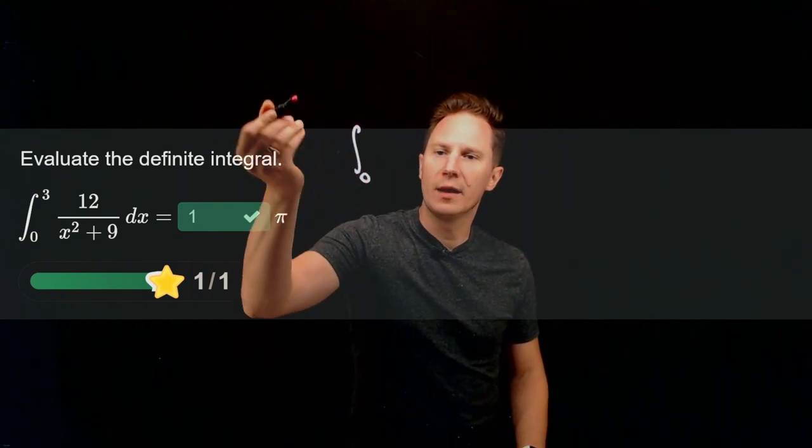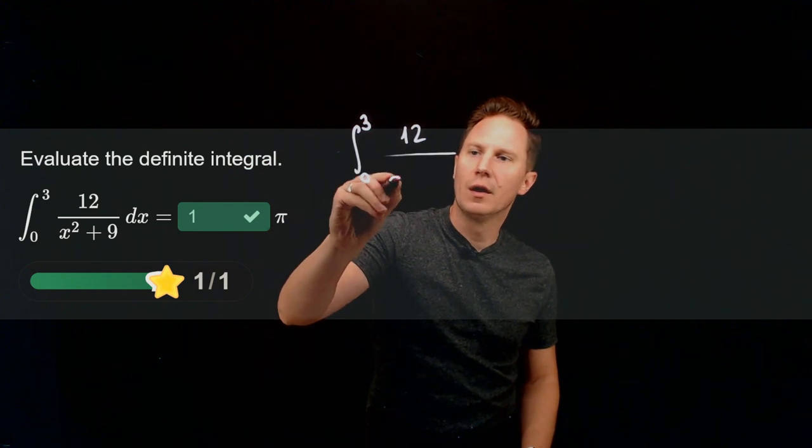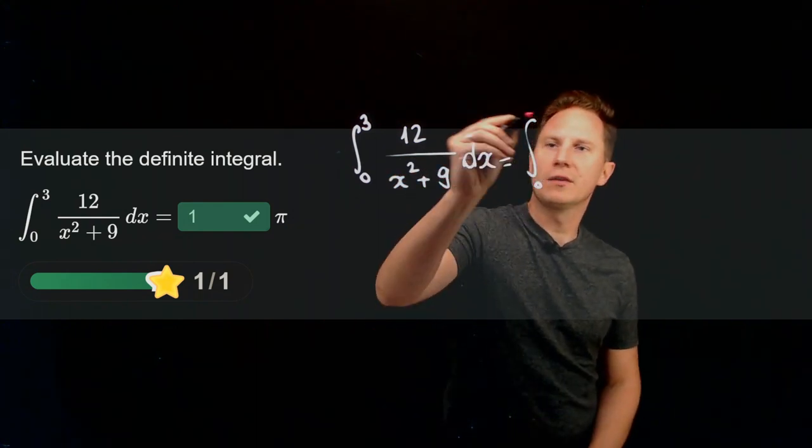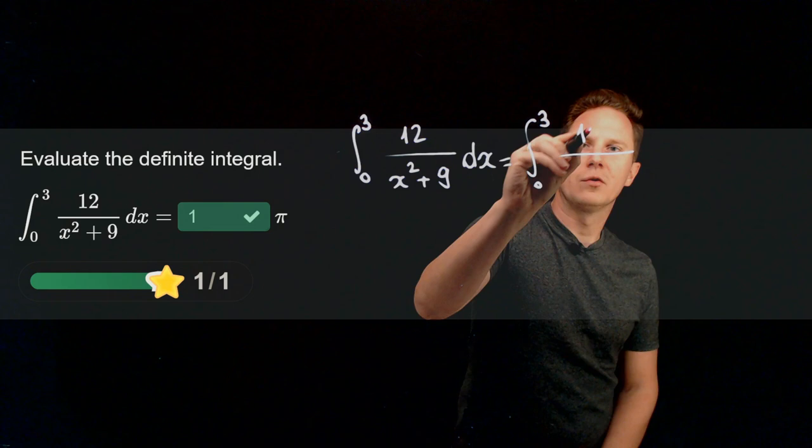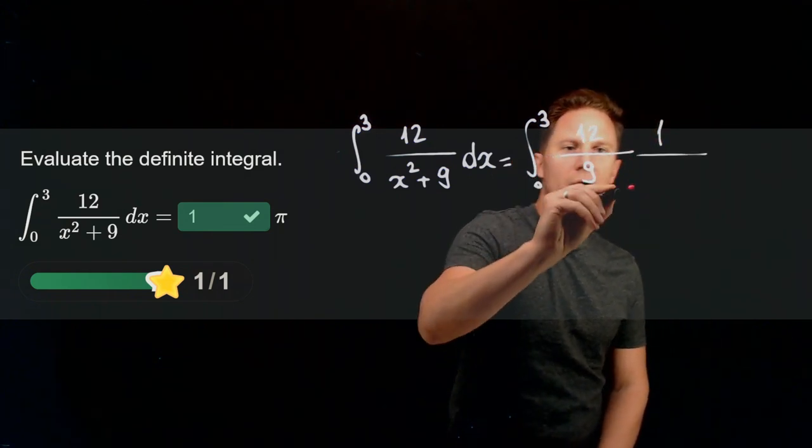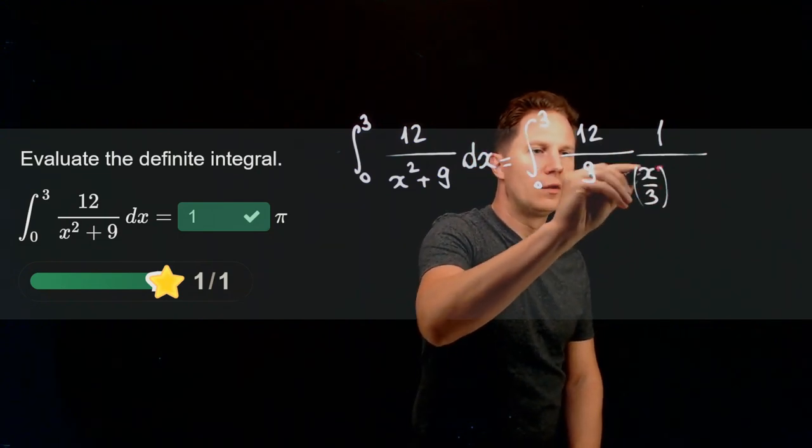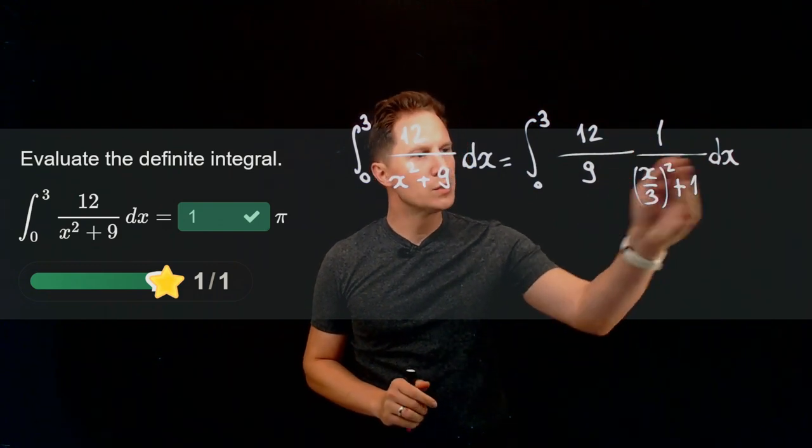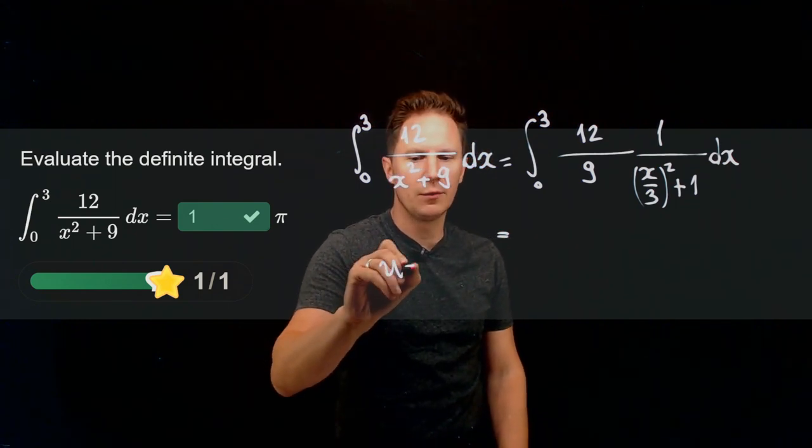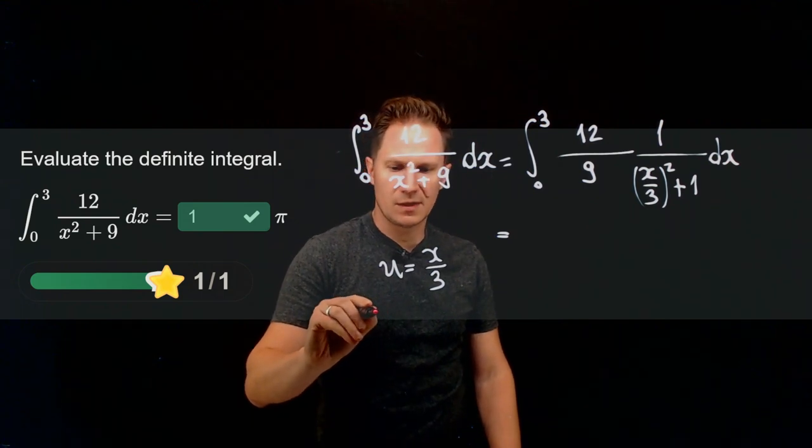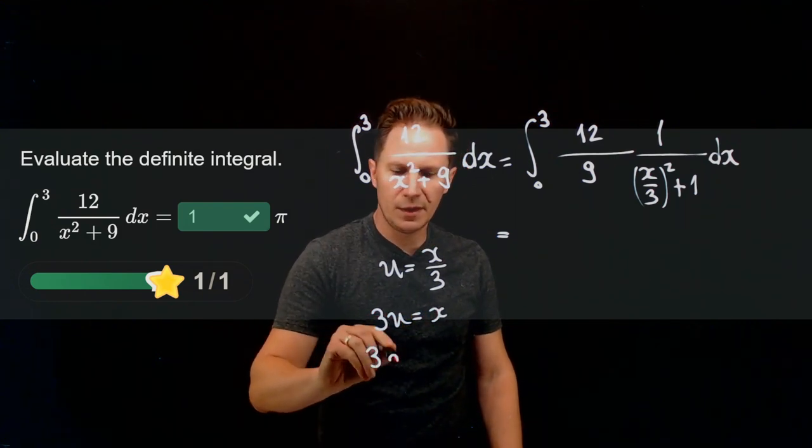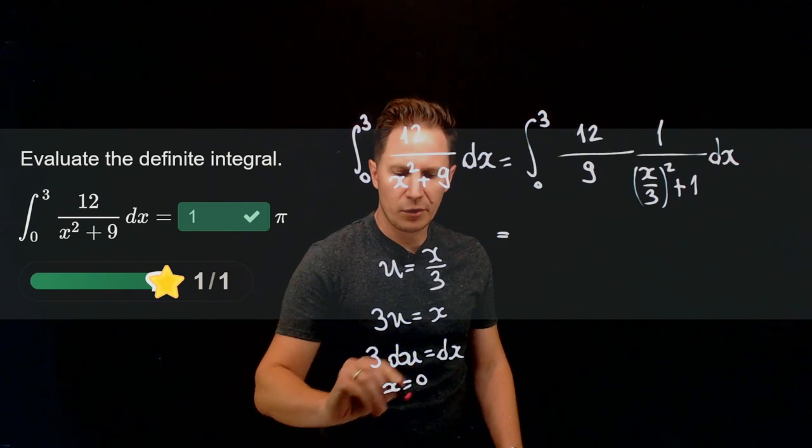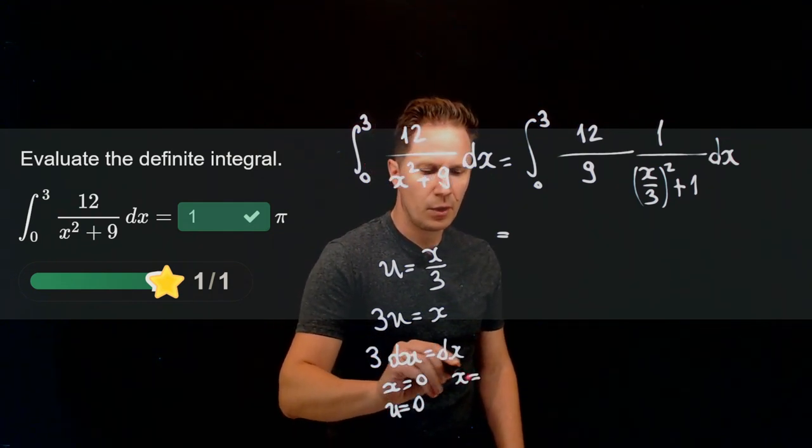So the way we can evaluate this or one way is to turn this integral into a basic integral using an appropriate substitution. We can do that if we first factor out that 9 from the denominator. So we write 12 over 9 times 1 over (x/3) squared plus 1 dx. So if we substitute u equals x over 3 here then that of course means that 3u is x and 3du is dx and when x is equal to 0 then u is equal to 0 whereas when x is equal to 3 then u is equal to 1.